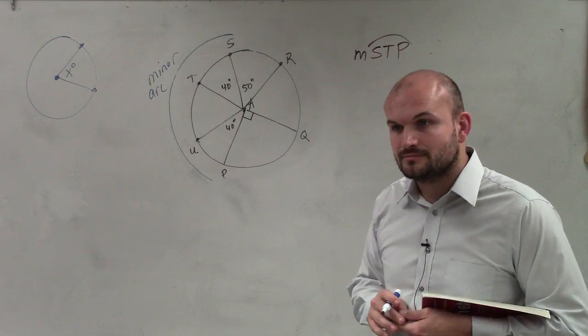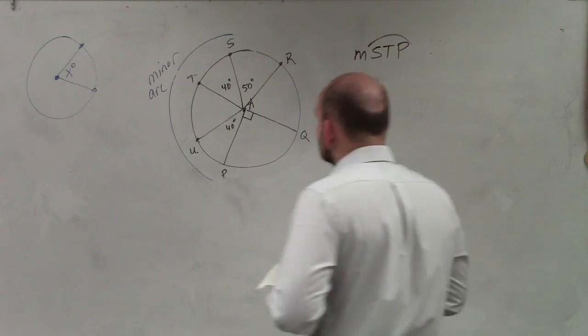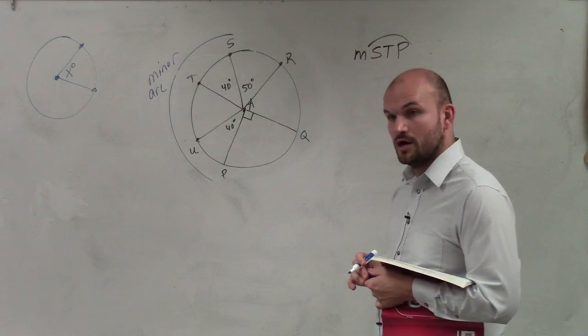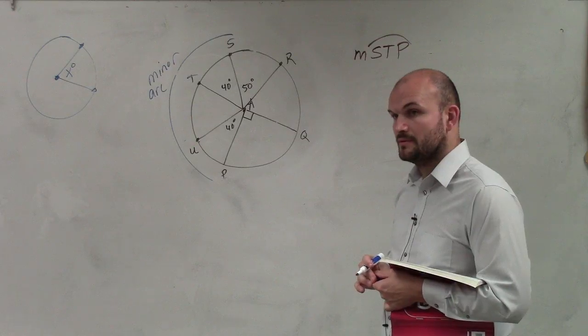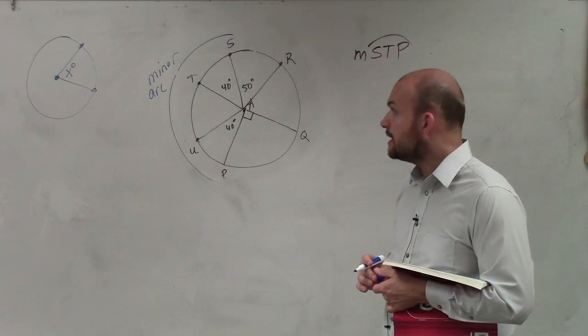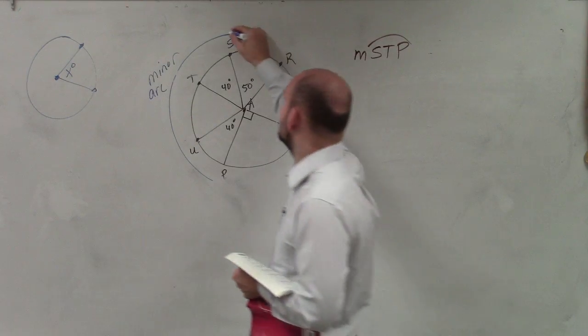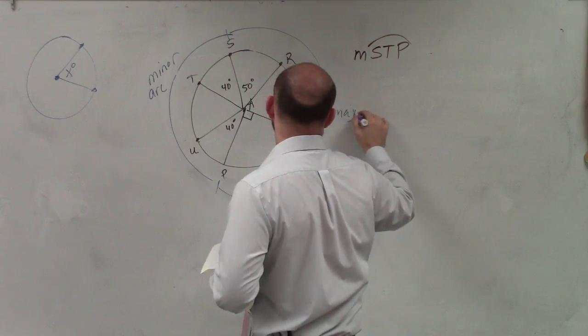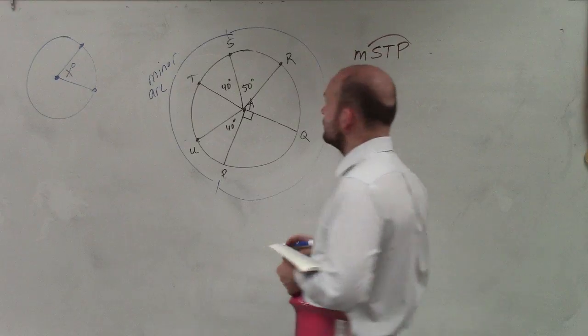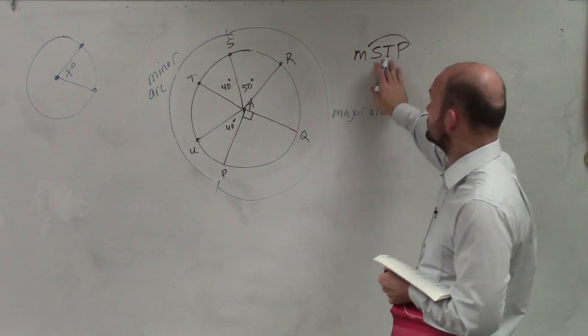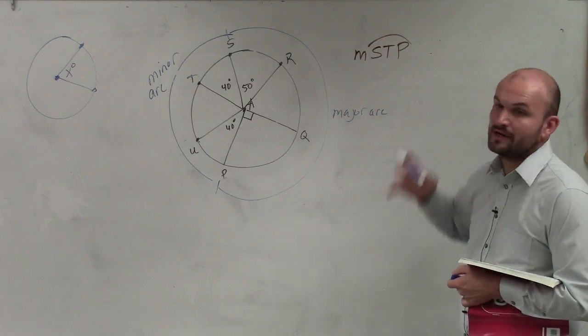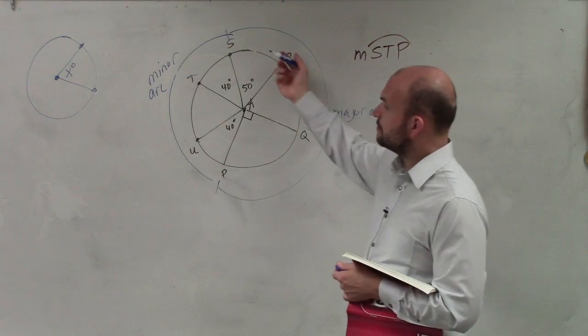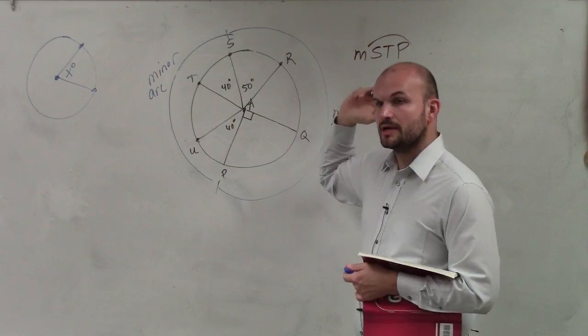Student: So this thing, the STP, is it the minor thing? Teacher: That is the minor arc. Student: Even though it's the one you're trying to solve? Teacher: Yeah. From here to here is the major arc, but we're not trying to find the major arc. Student: We're always trying to find the minor arc? Teacher: No, it depends on the question. This question says find the measure of STP, which is the minor arc.